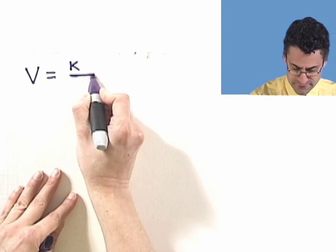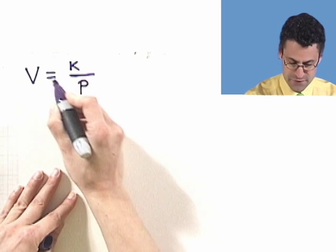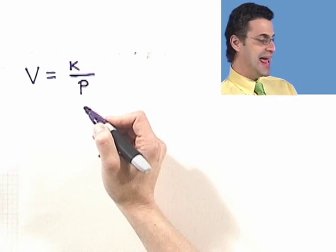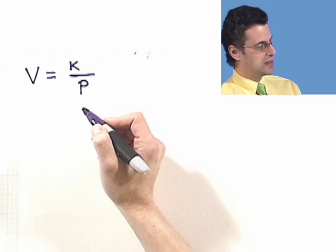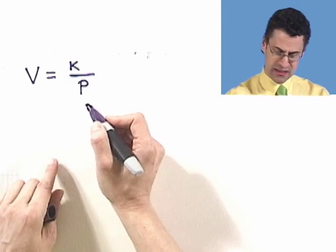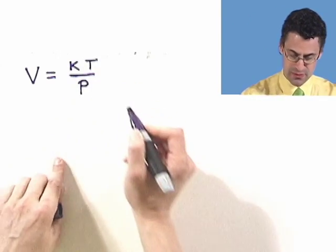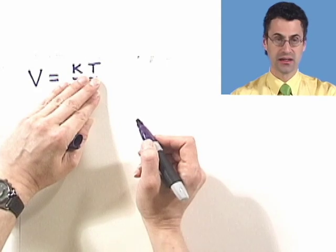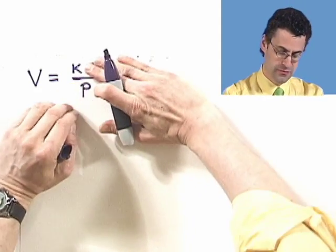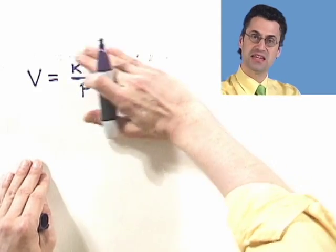That means over P, varies inversely, and directly with temperature T. Well, directly means that the T goes on top, varies directly, varies inversely. At the same time we get this.